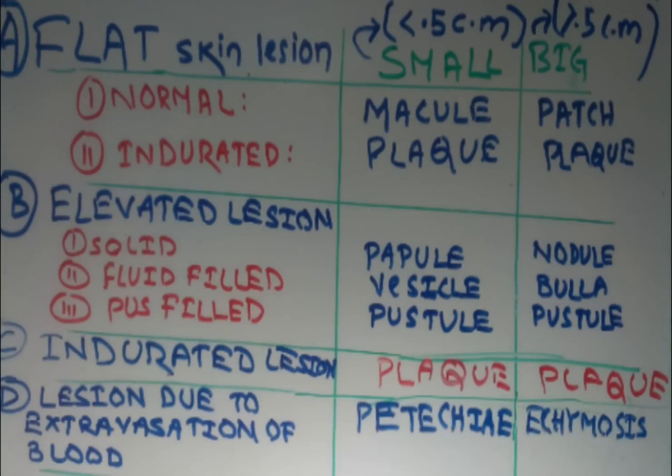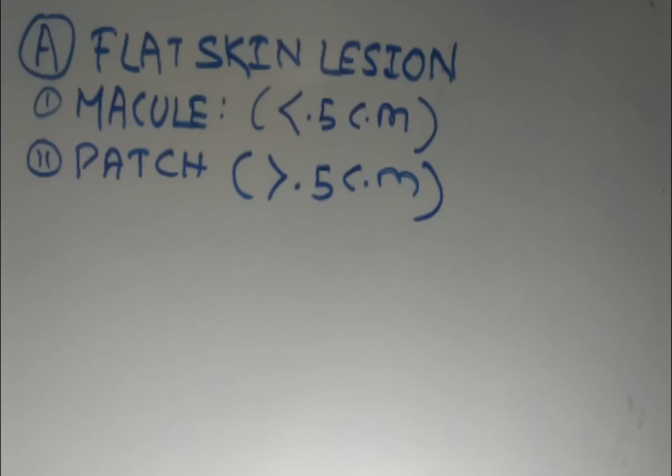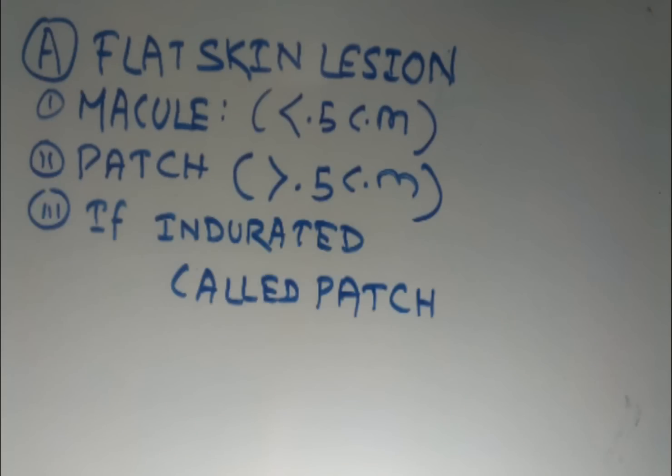The first group is flat skin lesions. Less than 0.5 centimeters, they are called macules; greater than that, they are called patches. Flat skin lesions are non-indurated, or simply called flat.